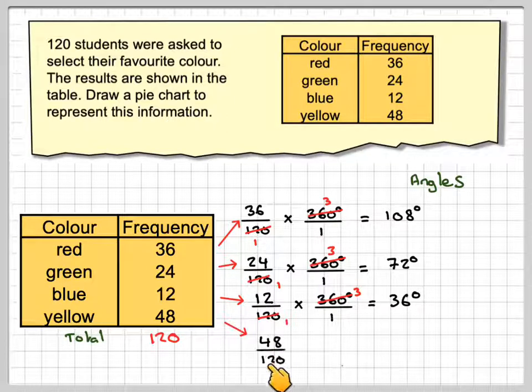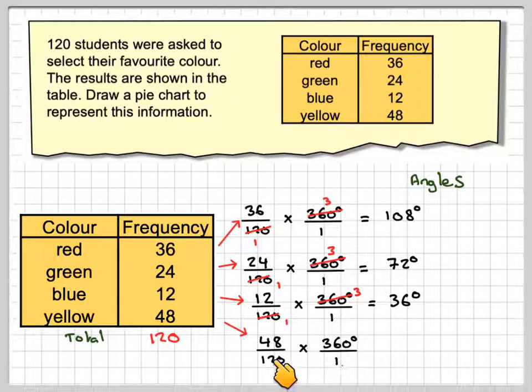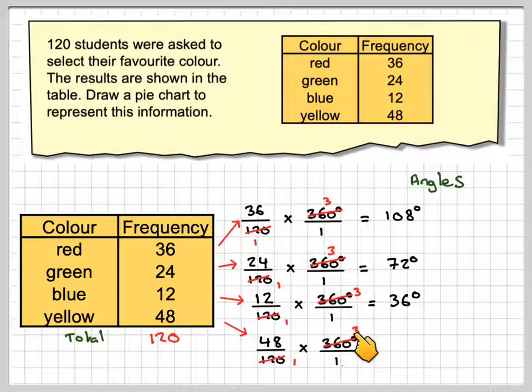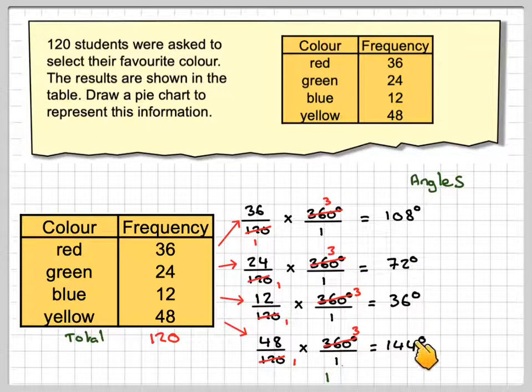And then finally for 48, we'll do 48 over 120 times 360 over 1. And then if we cancel, we will get 3 here. So 3 times 48 gives me 144. Now you should just check at this stage that these do add up to 360.